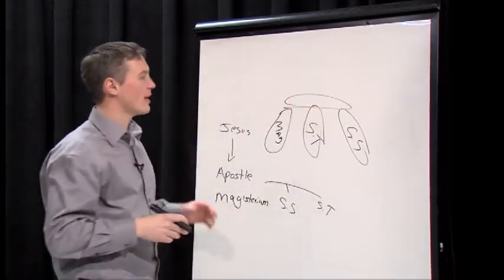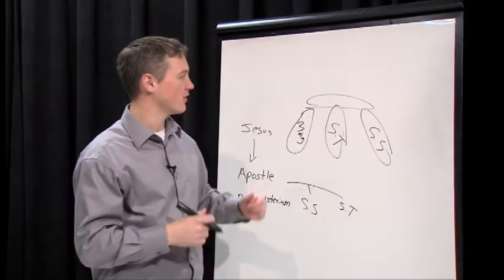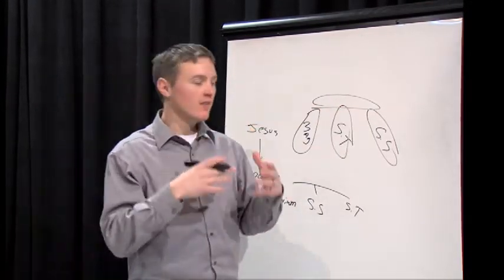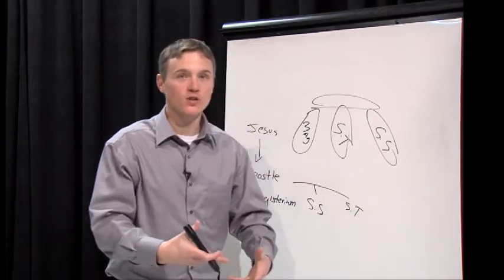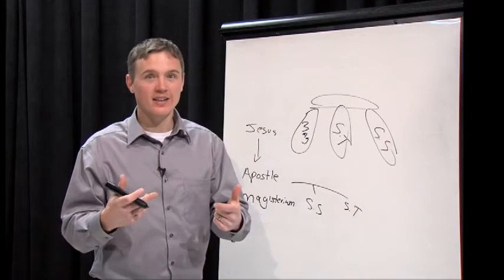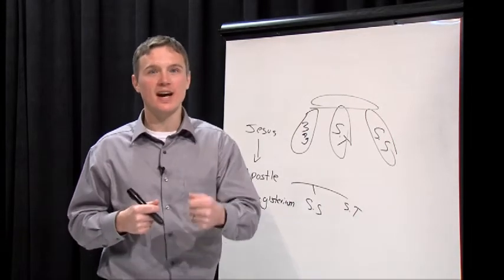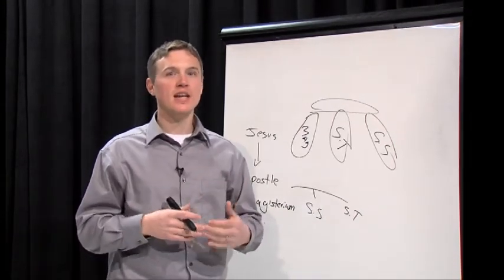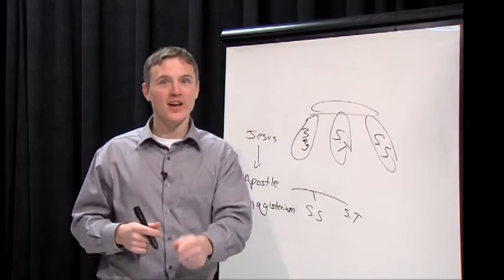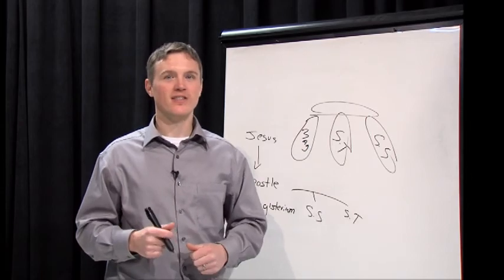They act as a tripod to hold up and protect the truth. If one of these legs is missing, the thing falls over. So who is God? If we want to clearly know God as He reveals Himself to be, it is important that our understanding falls within the guardrails and the strike zone of the Magisterial teaching. Thank you.